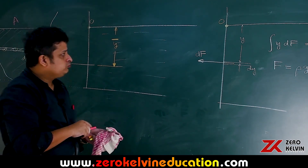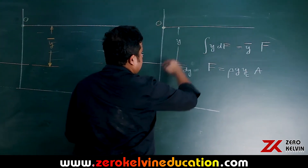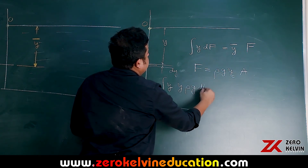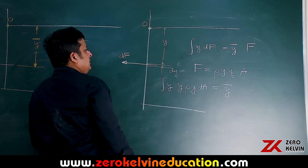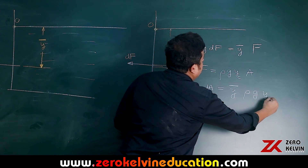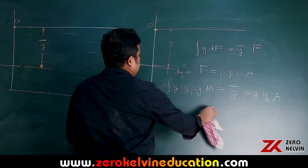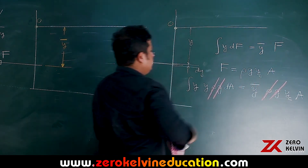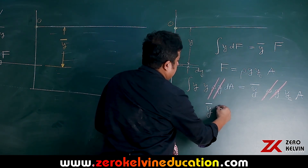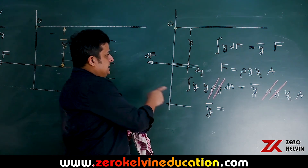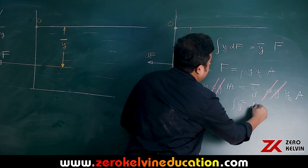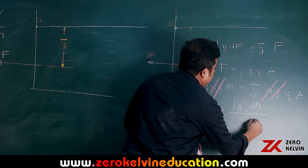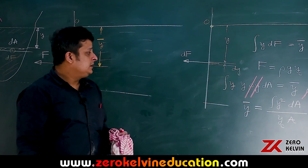Now we calculate the torque for the general case. From ∫y·dF = ȳ × F, and since dF = ρg·y·dA, we get ∫y²·ρg·dA = ȳ × ρg·yc·A. The ρg terms cancel, giving: ȳ = ∫y²·dA / (yc × A). This integral ∫y²·dA is the second moment of area about the free surface, giving the general formula for the location of the center of pressure.